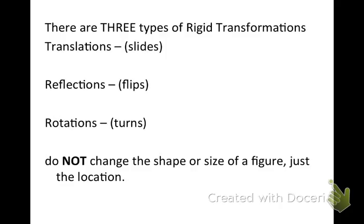All right, there are three types of rigid transformations, and you're familiar with all of them. The first one is a translation, which you know as a slide, and that tells you to move a figure left or right and up and down.